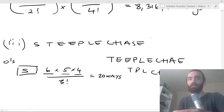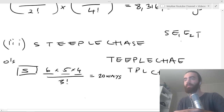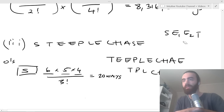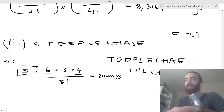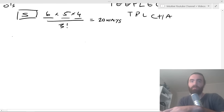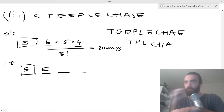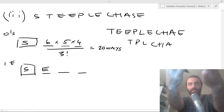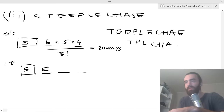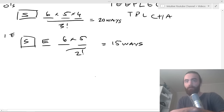For zero E's: six times five times four divided by three factorial equals 20 ways. For one E: one E is selected, leaving two slots from six letters — six times five divided by two factorial equals 15 ways. For two E's: two E's selected, one remaining slot from six letters — six ways. For three E's: only one way to do that.